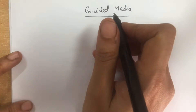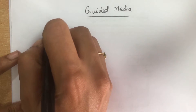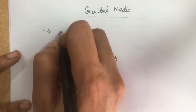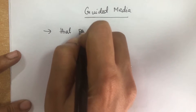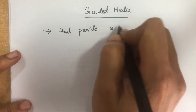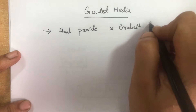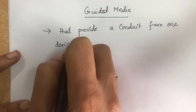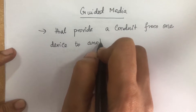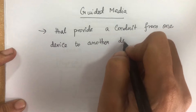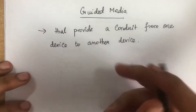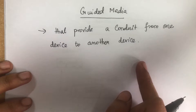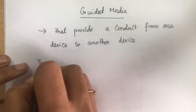Guided media are those that provide a physical contact from one device to another device through a cable. It is broadly classified into twisted pair cable, coaxial cable, and fiber optic cable. First we will see in detail about twisted pair cable.